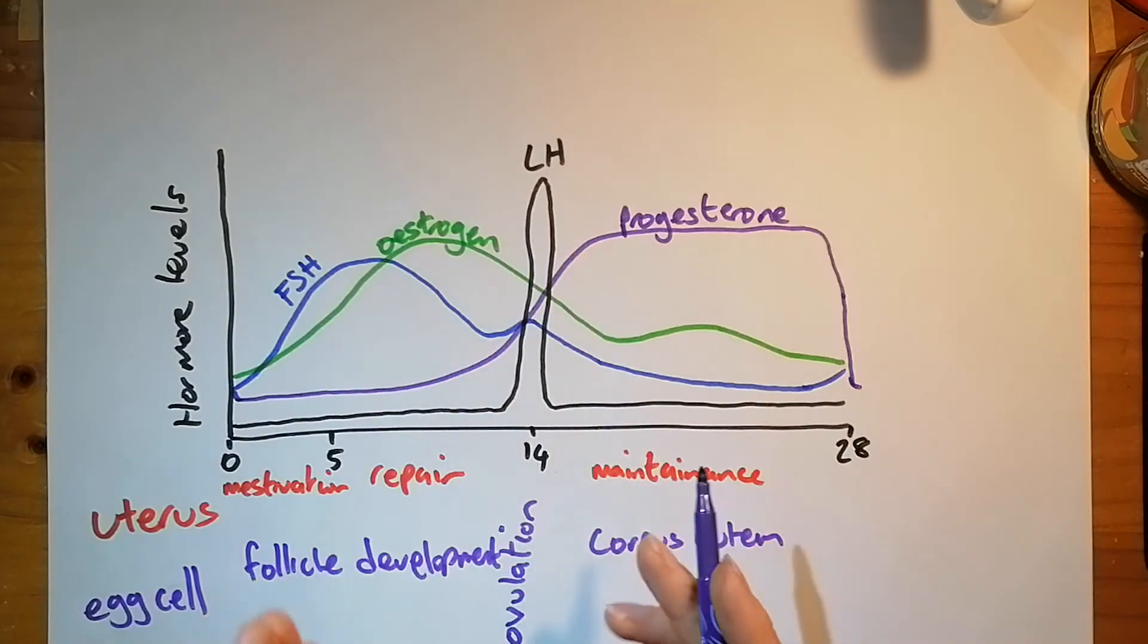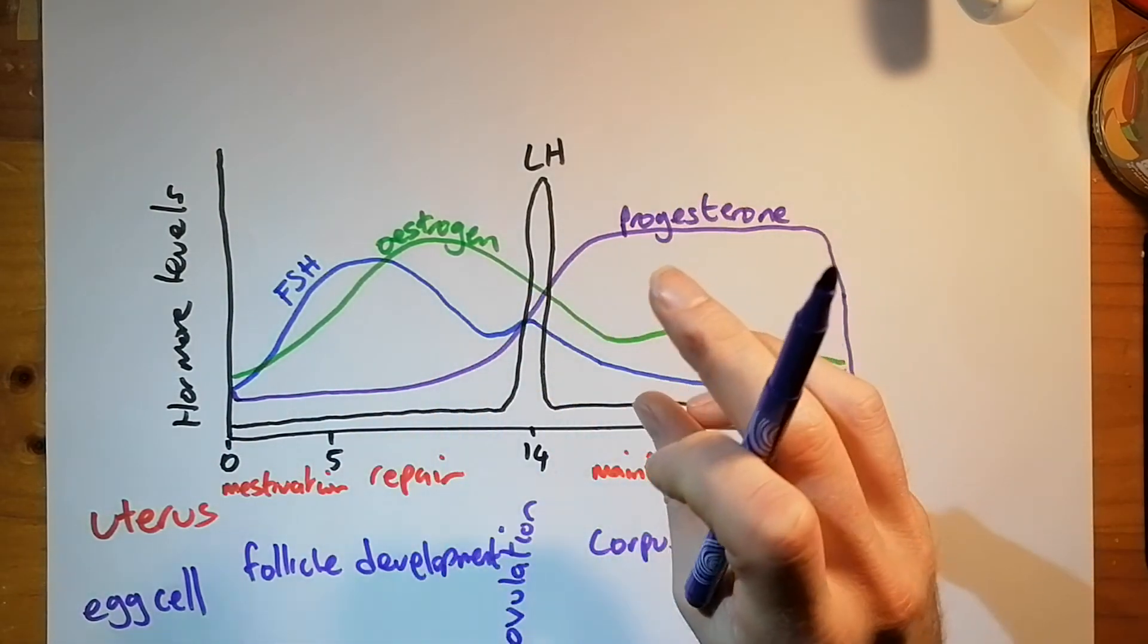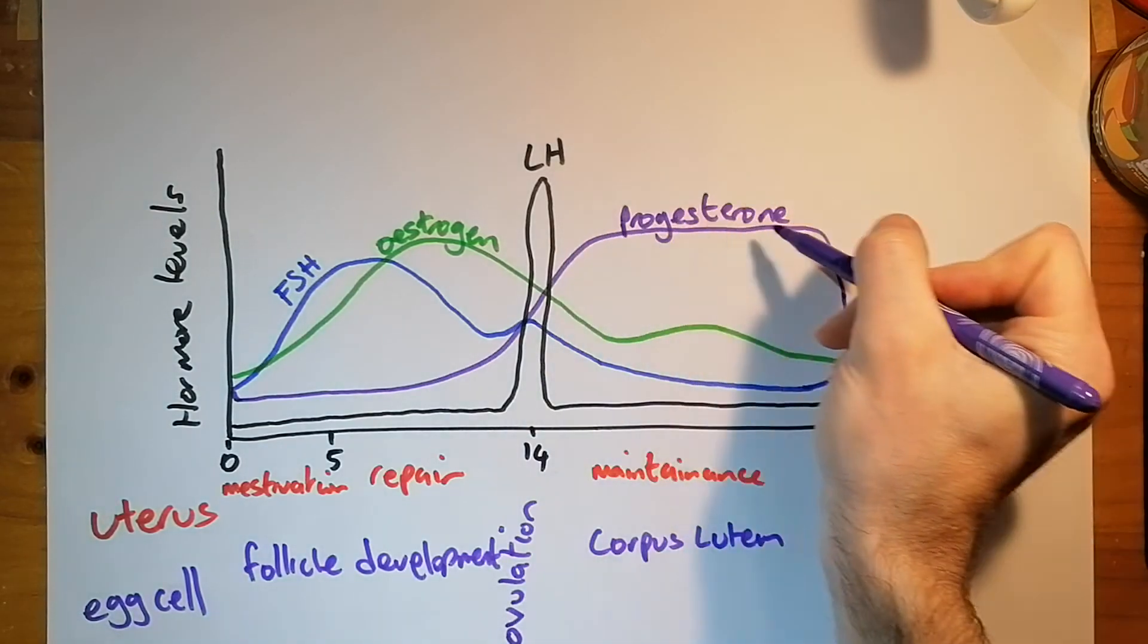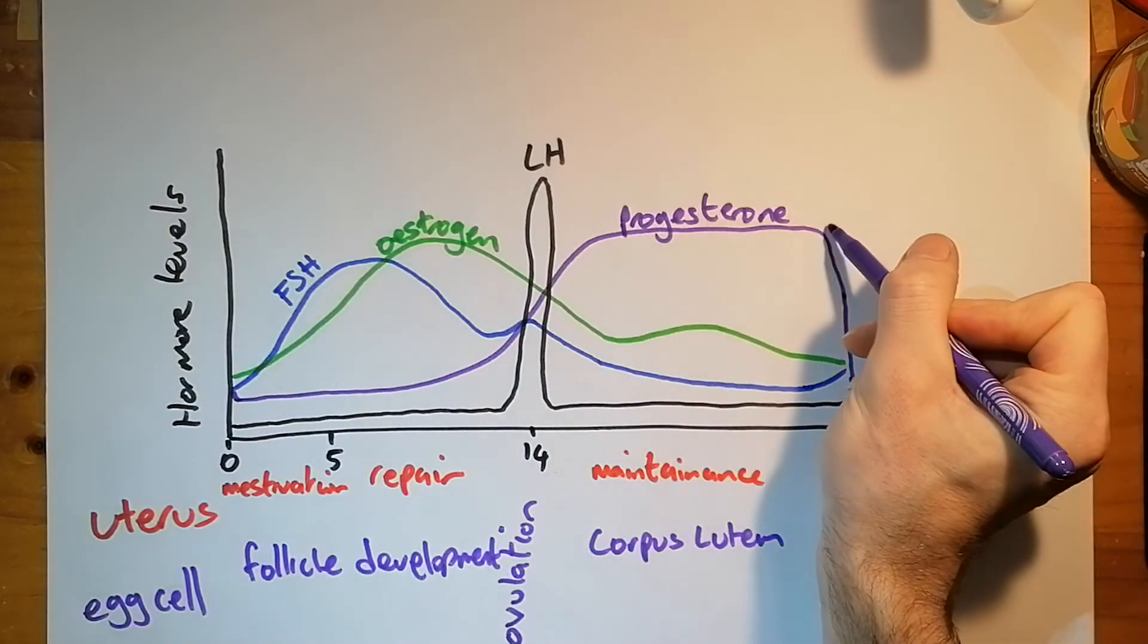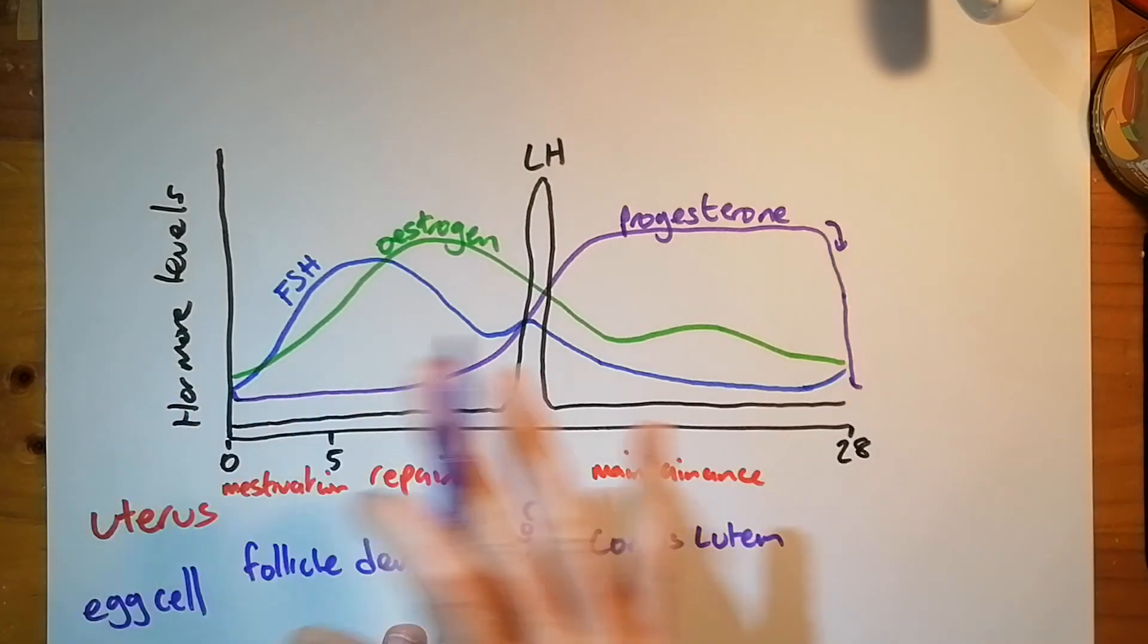And that causes maintenance of the uterus lining after ovulation. So that means that if the egg was to be fertilized, the uterus lining would be there. It could implant in that. And at that point of implantation, it could form a placenta. And that fall in progesterone, that's what causes the onset of menstruation. And then the cycle starts again.